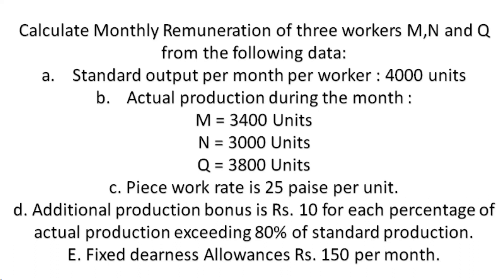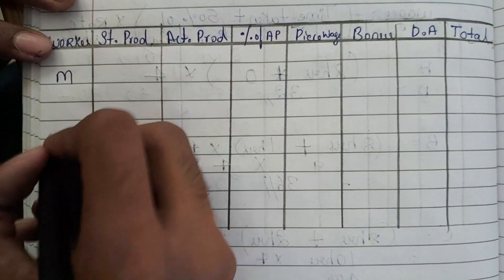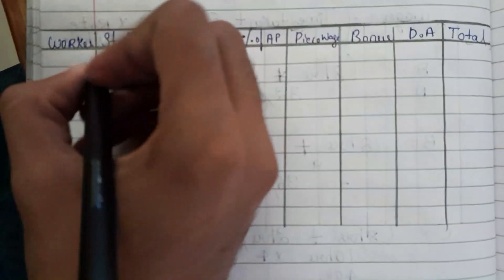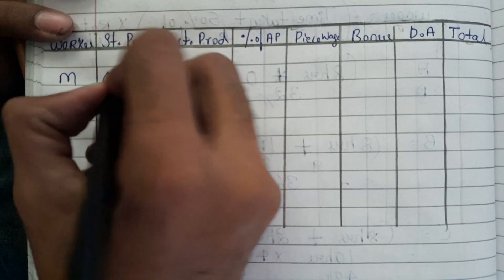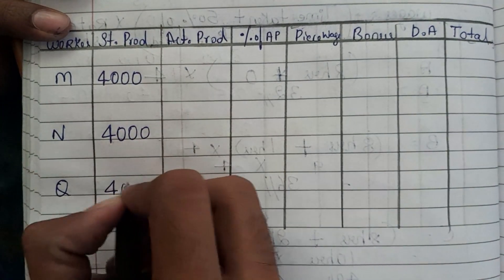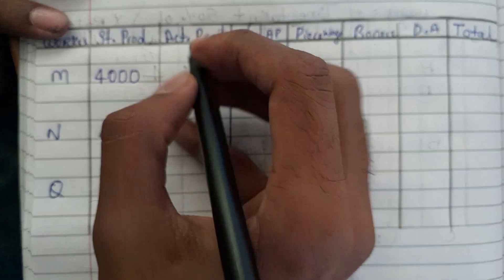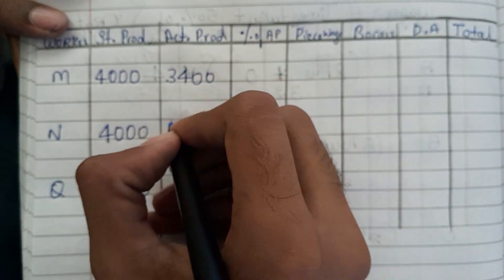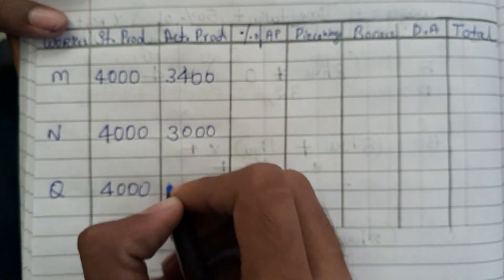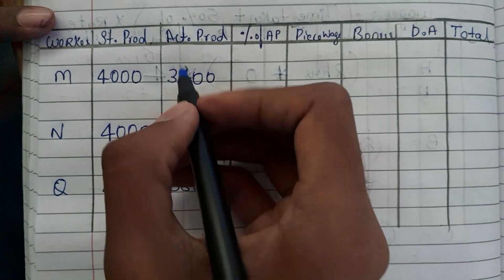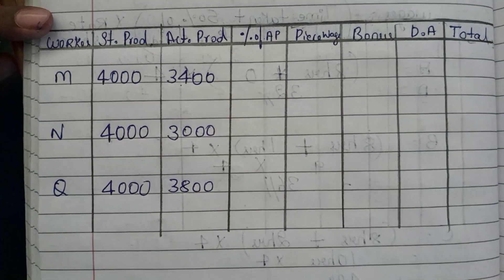Fixed DNS allowances is 150 rupees per month. Now we have three workers M, N, and Q. The standard production for all these workers is 4000 units each. The actual production: M has produced 3400 units, N has produced 3000 units, and Q has produced 3800 units.